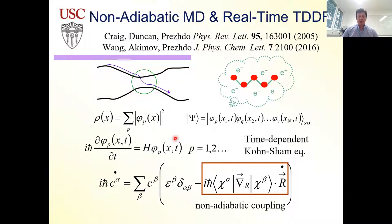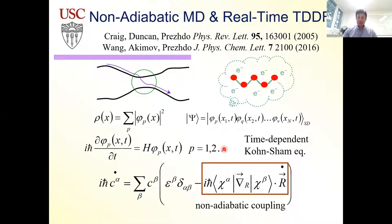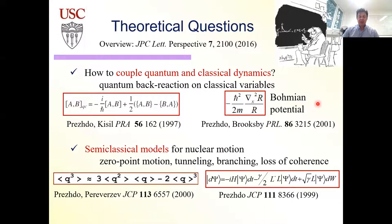We have nuclear motion that gives us a time-dependent Hamiltonian. The time-dependent Hamiltonian defines the DFT functional and we solve the time-dependent quantum equations, including non-adiabatic coupling, which allows us to consider transitions between electronic states. We can also include spin-orbit coupling and Coulomb coupling that couples excitonic states. My early interest was in semi-classical and quantum-classical approximations — for example, defining a quantum-classical Lie bracket combining commutator and Poisson bracket, and coupling quantum and classical dynamics using Bohmian interpretation.